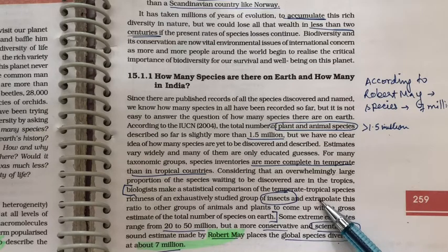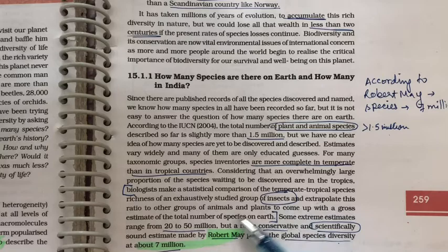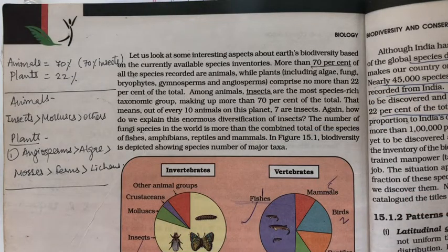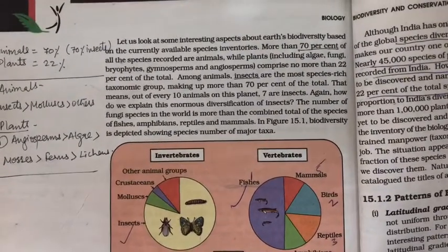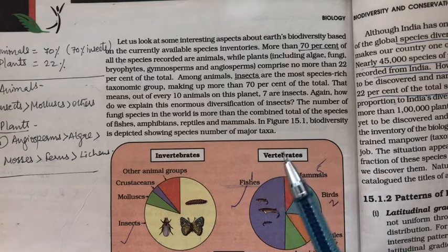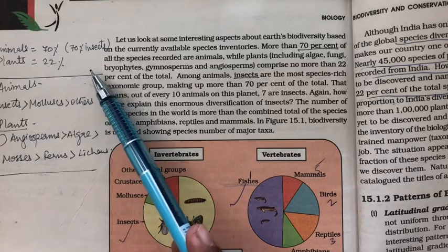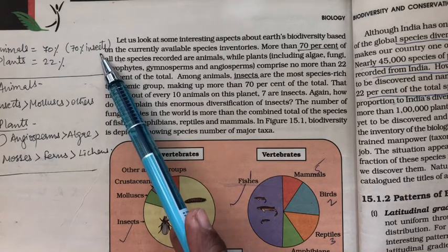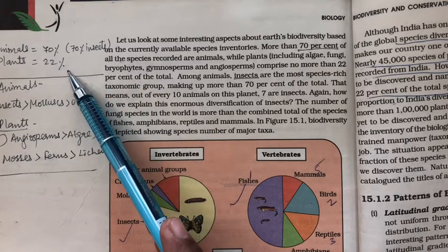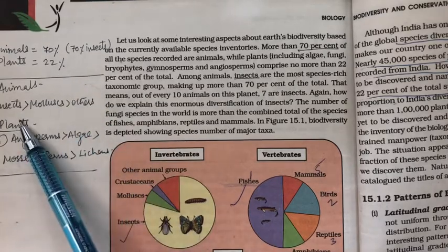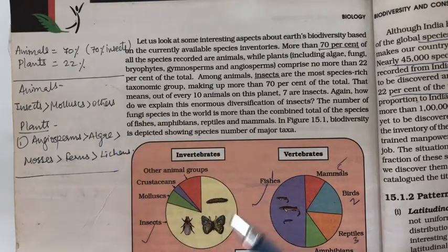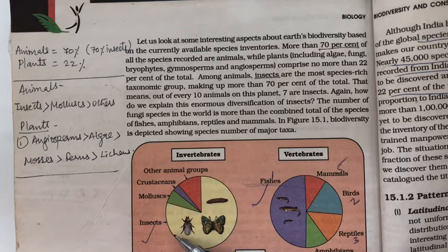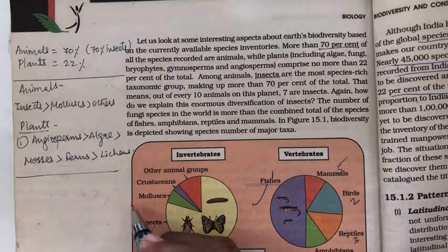Extrapolation means estimating the value of other organisms in comparison to insects, which are the most biodiversified group. Among all recorded species, animals account for almost 70 percent, and of those, 70 percent are insects — making insects the most biodiversified group. Plants account for only 22 percent of species. Among invertebrates, insects are most diverse, followed by mollusks. Among vertebrates, the order of diversity is: fishes, birds, reptiles, amphibians, and then mammals.